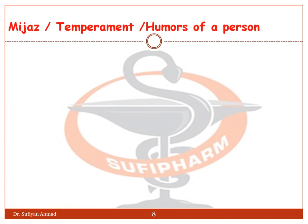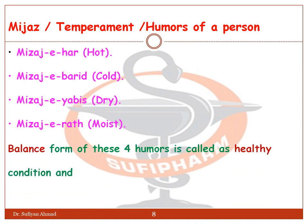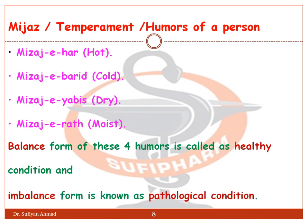These four qualities represent the nature or humor of an individual, known as Mijaj. Mijaj-e-har means hot; Mijaj-e-barred means cold; Mijaj-e-yabiz means dry; and Mijaj-e-rat means moist. The balanced form of these four humors is called the healthy condition, and the imbalanced form is known as the pathological condition.